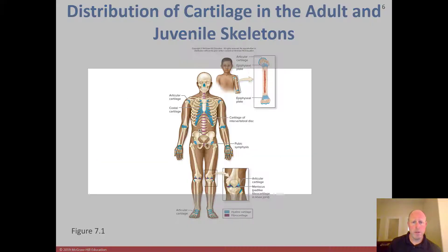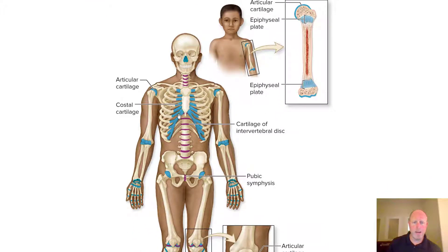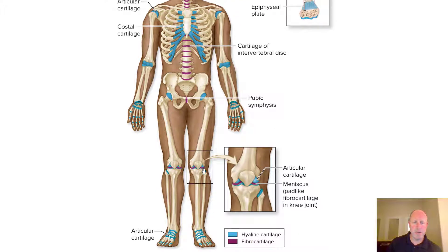Looking at our skeleton diagram, in the adult and juvenile skeleton we can see the articular cartilage at the end of this long bone, the epiphysis, and then the epiphyseal plate. The diaphysis is shown here as well. You also see a lot more hyaline cartilage shown in blue, and fibrocartilage shown in red. The three primary places you typically see fibrocartilage are the intervertebral discs, the pubic symphysis, and the menisci of the knee.